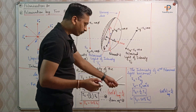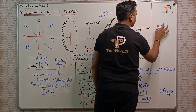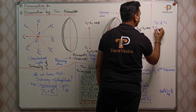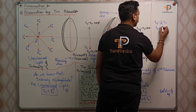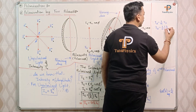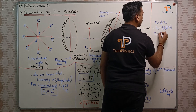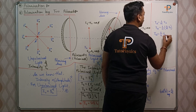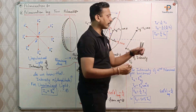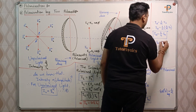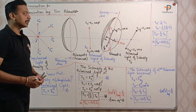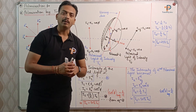Therefore I2 = (1/2)·I1. Since I1 = (1/2)·I0, we get I2 = (1/2)×(1/2)·I0 = (1/4)·I0. So the intensity of the second polarized light is one-fourth, that is 25%, of I0. I2 = 25% of I0.